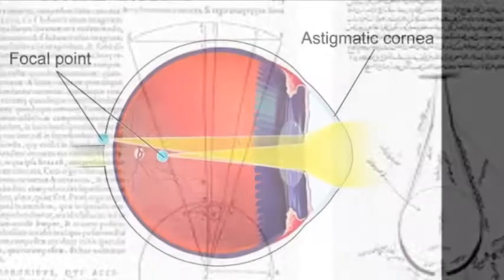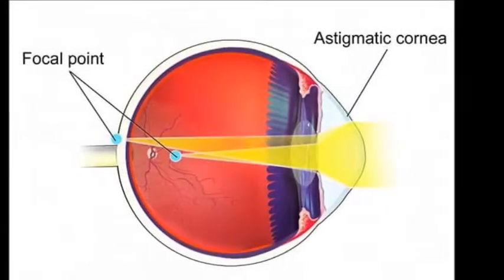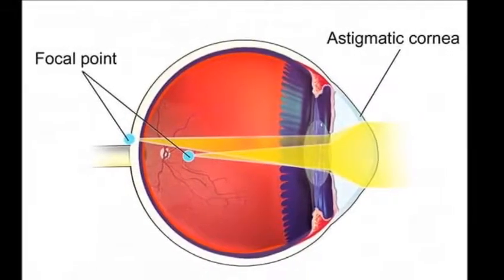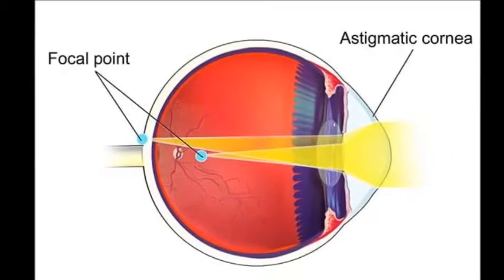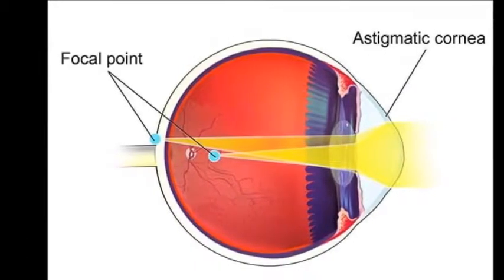Although Young played a vital role in discovering the cause behind astigmatism, it is also important to note that his contributions to discovering how people perceive color also played a crucial role.